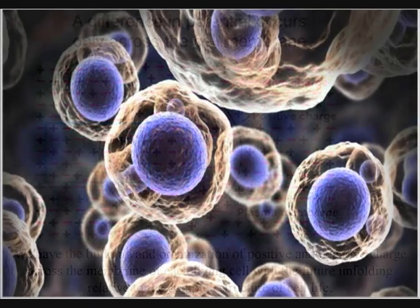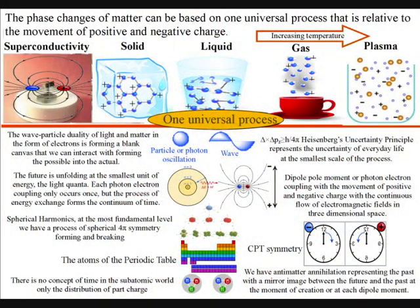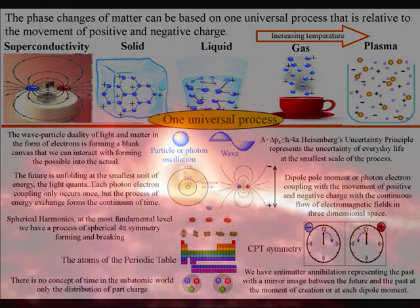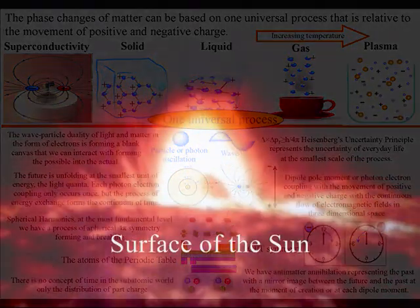At high temperature, we have a phase change of matter, with charge being able to cover a large area of interstellar space in the form of plasma.